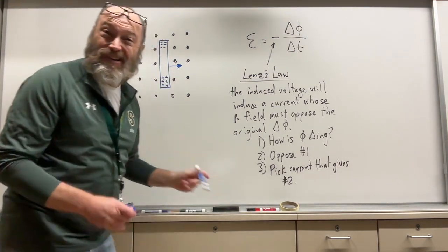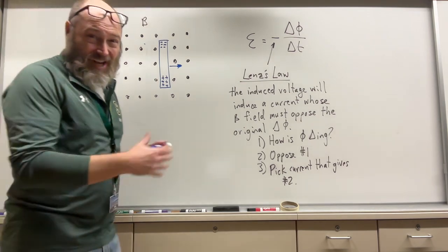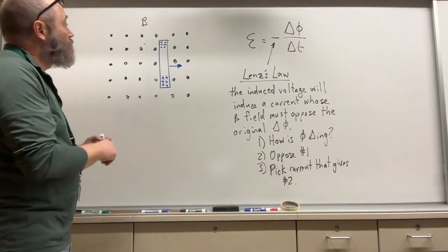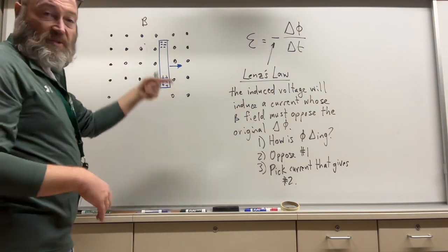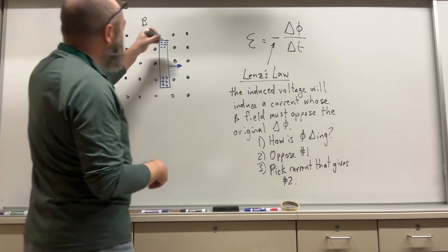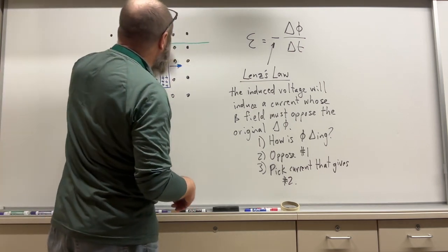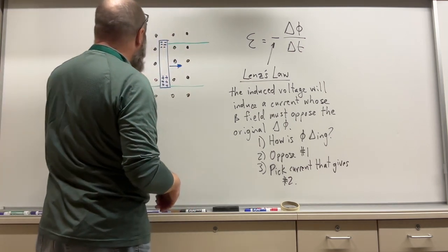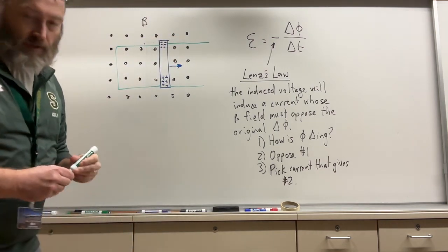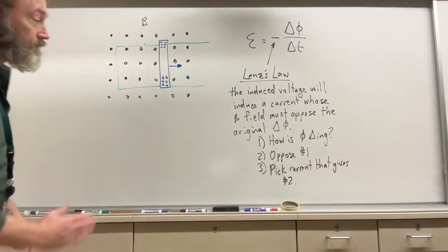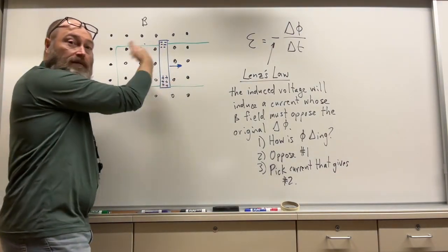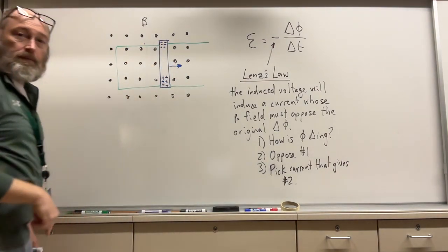Here's the part that I think is pretty cool: you're going to have to be able to find the direction of the current. If this thing is just moving, I don't get current because it's just a metal bar — there's no complete circuit. But let's say this metal bar is moving on a metal rail that kind of makes a loop. As this metal bar moves across, I'm increasing the flux inside this loop.